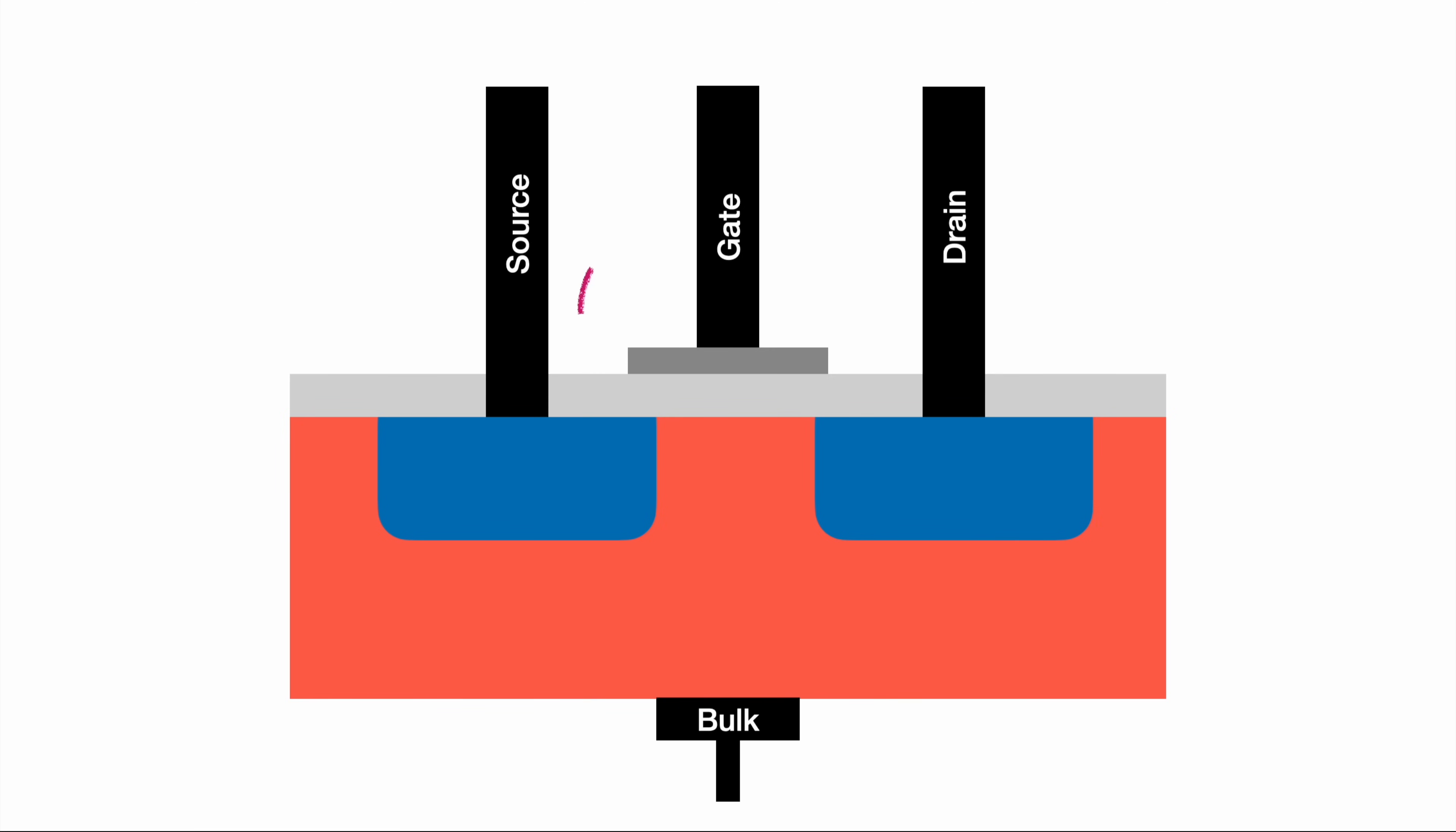Taking a closer look at the gate, we can identify this material as aluminum, which is a metal. This clarifies the metal in the name of the MOSFET.